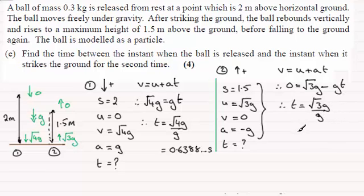And if I rearrange this to make T the subject, T will equal root of 3g divided by G. And working this out in your calculator, I find that you get 0.5532 and so on. So this is the time of this half flight.